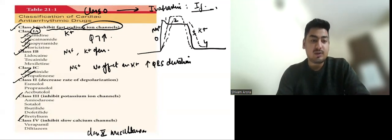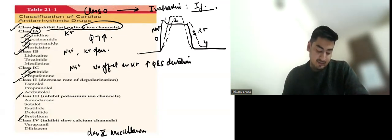Then we have class 2 agents, in which we have beta blockers like Esmolol, Propranolol, Acebutolol.